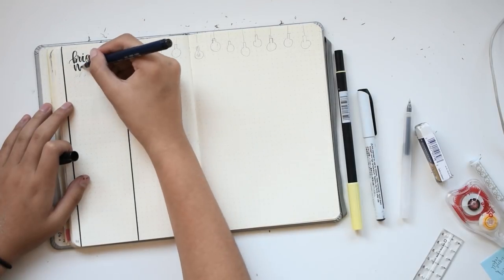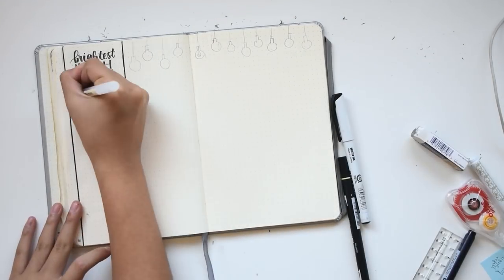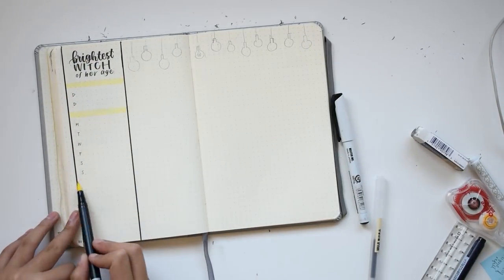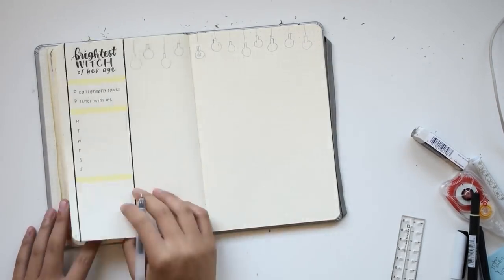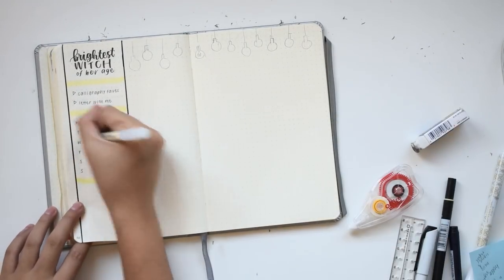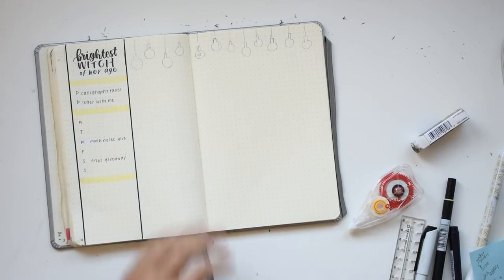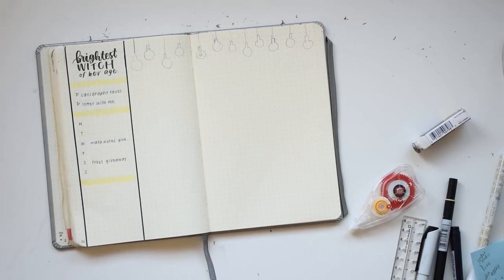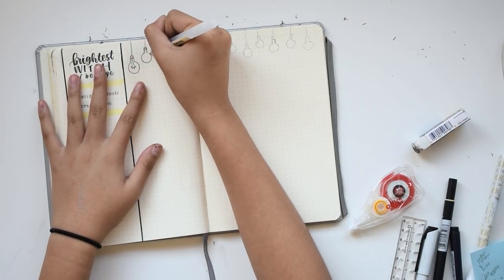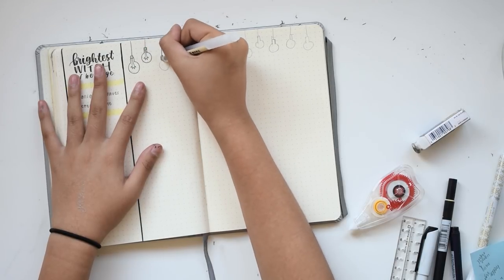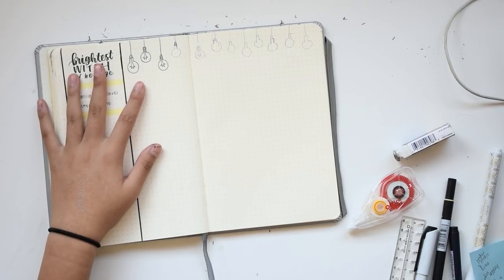But recently I've switched to the Tombow one because I spilled water on my math notebook and I did all of my note headers with the Pentel Fude Touch brush pen, but the Pentel Fude Touch is not waterproof, so a lot of my headers got smudged. So now I'm really scared of that happening to my other notes or my bullet journal, so I'm starting to use the Tombow Fudenosuke, which is waterproof—I looked it up.